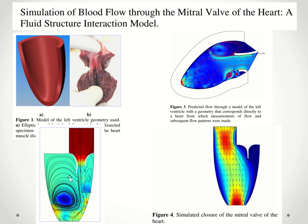This shows blood flowing through the ventricle and through the mitral valve as it opens. This approach greatly simplifies the model, so it will be less accurate, but the question is: how accurate do you need to be? Do you need to be super accurate, or do you just need to make judgment calls on certain parameters?